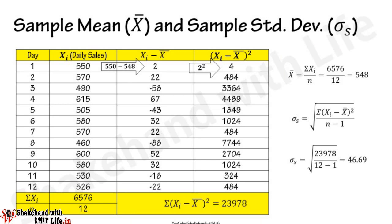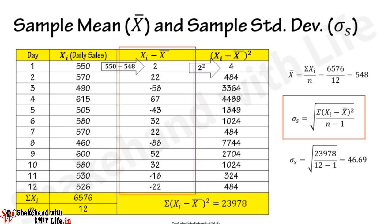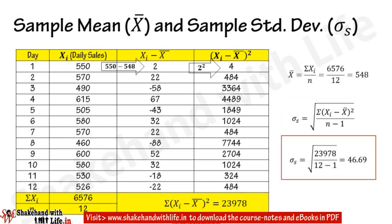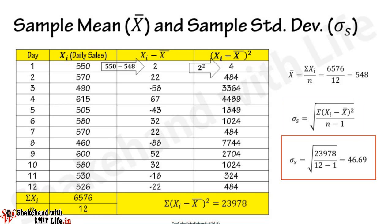To calculate the sample standard deviation, subtract x-bar from each xi, shown in the third column as xi minus x-bar. Then find the square of each value in the fourth column, given by (xi minus x-bar) squared. Find the sum of the fourth column values — sigma (xi minus x-bar) squared — which comes out as 23,978. Substituting into sigma-s equals the square root of sigma (xi minus x-bar) squared divided by n minus 1, the sample standard deviation comes out as 46.69.